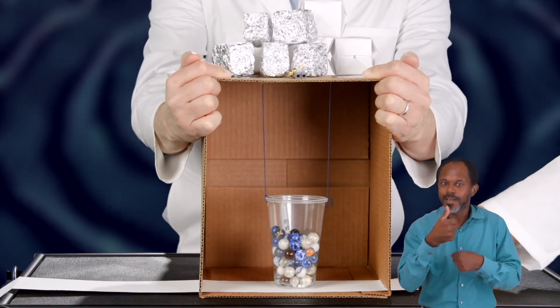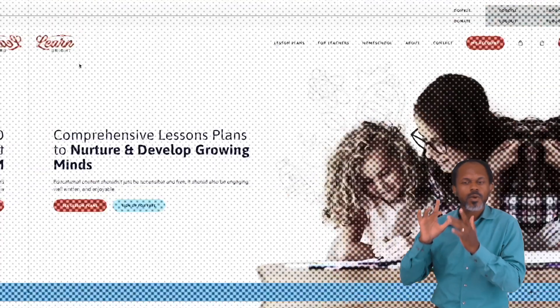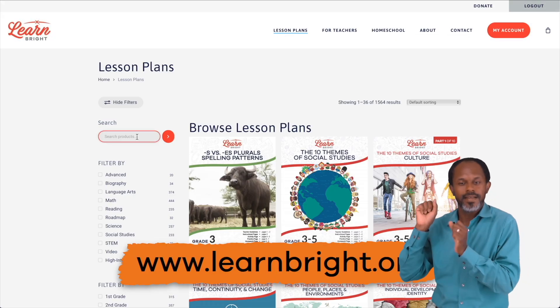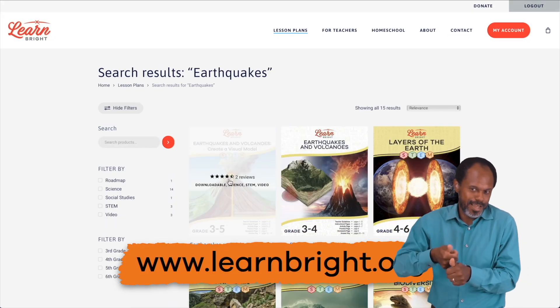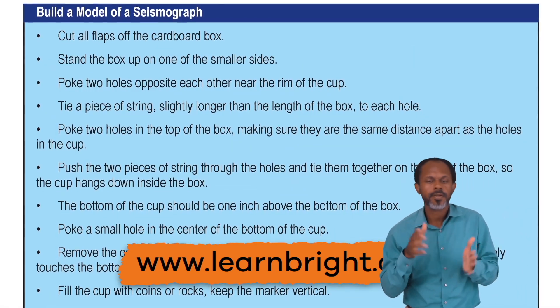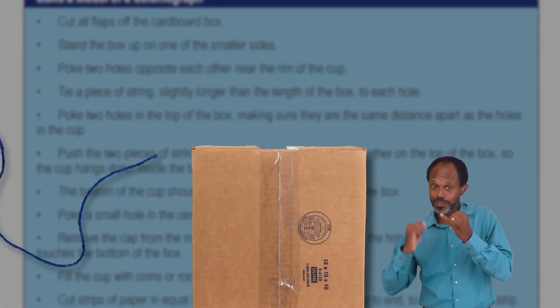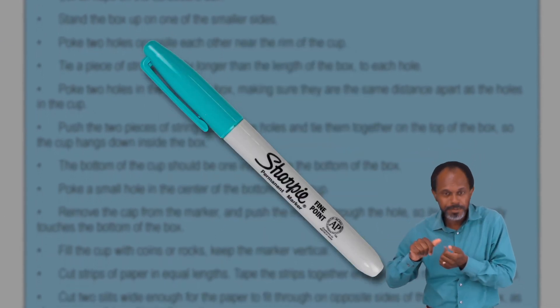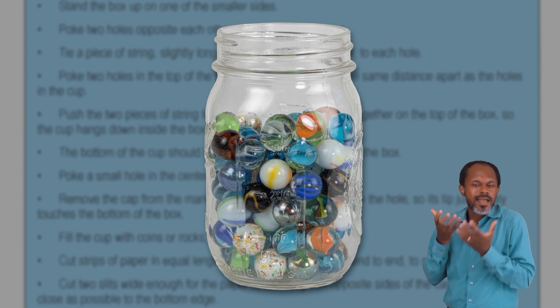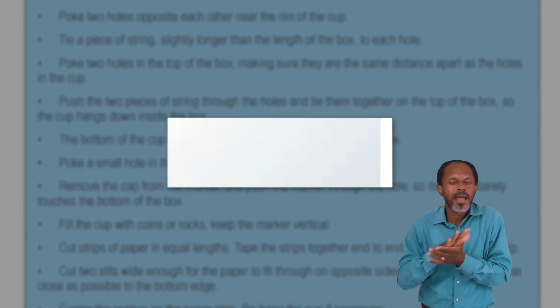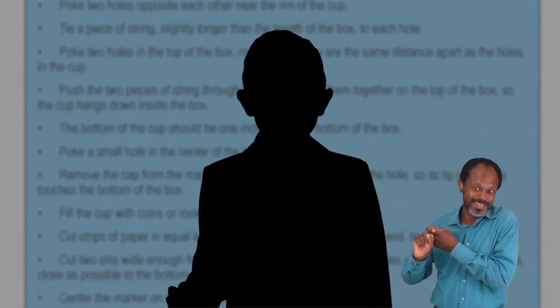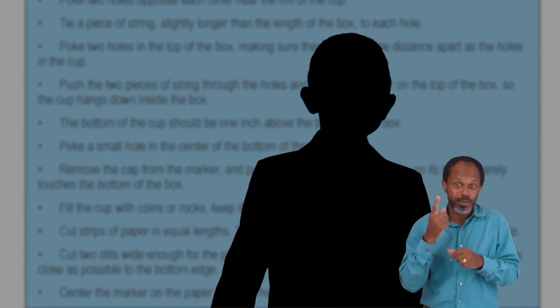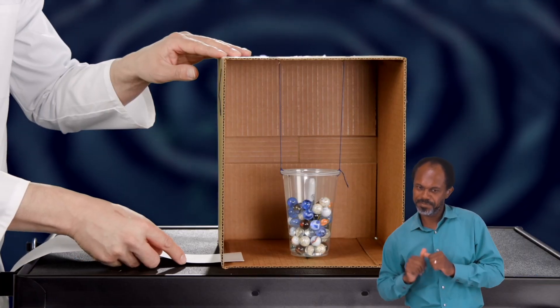You can make a model of a seismograph at home and we are going to show you how. It's activity time! You can print off directions for this one on our website at learnbright.org. You'll need a cardboard box, string, a plastic cup, a marker, small heavy objects, a long strip of paper, and a friend — because this is an activity for at least two people.